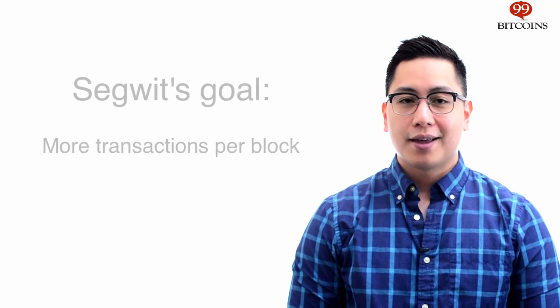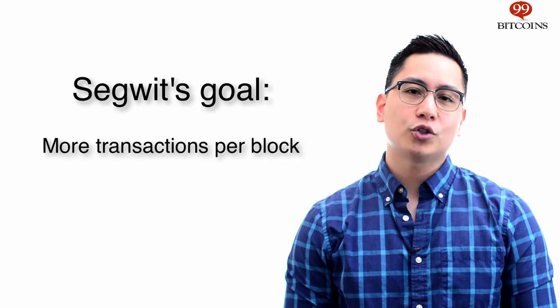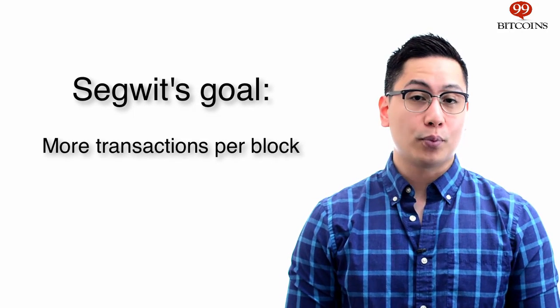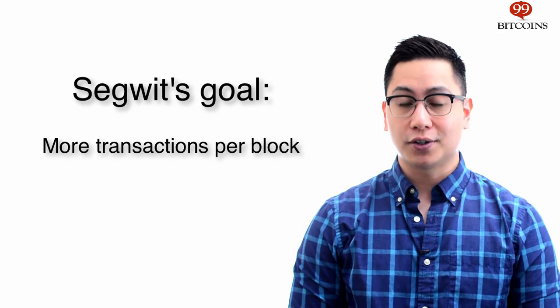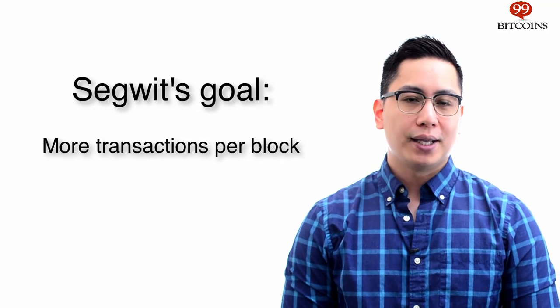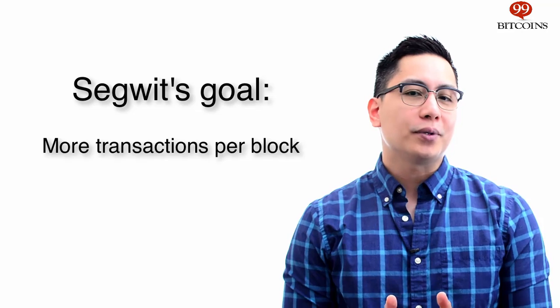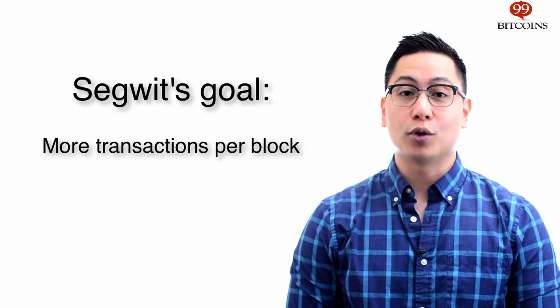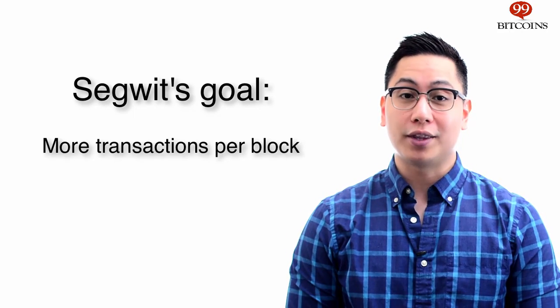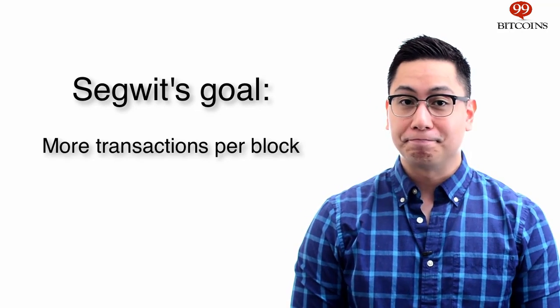SegWit was invented in order to help shrink the file size of Bitcoin transactions. This allows more transactions to be approved each time a block is confirmed. Basically, its purpose is to make the Bitcoin network approve more transactions with each block.